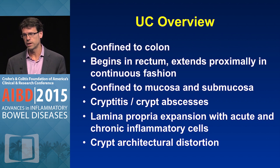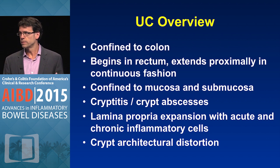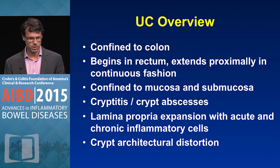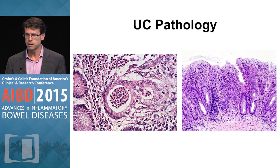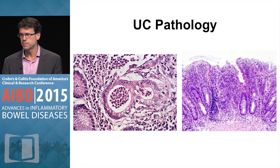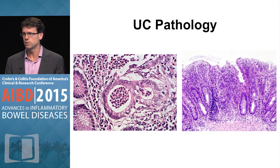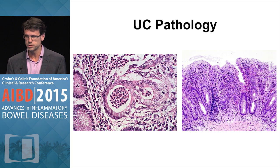Pathologically, it's typified by cryptitis and crypt abscesses. There's also lamina propria expansion as well as crypt architectural distortion. On the left you see a classical example of a crypt abscess, and on the right you have marked expansion of the lamina propria as well as crypt architectural distortion.